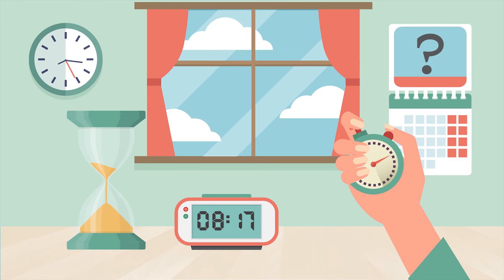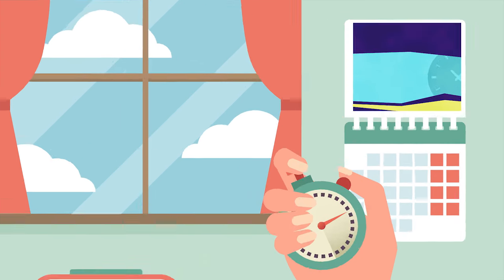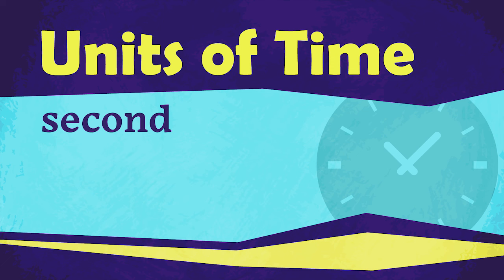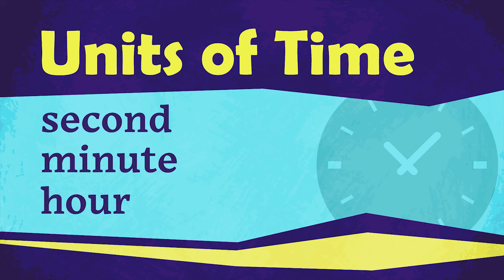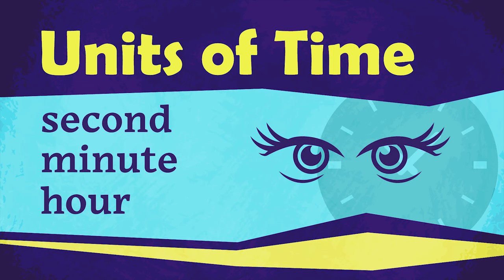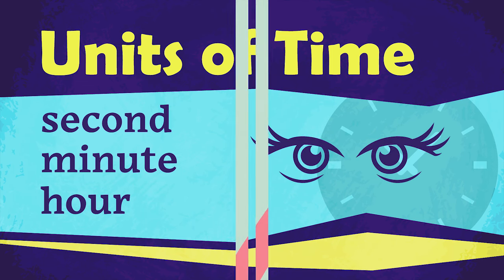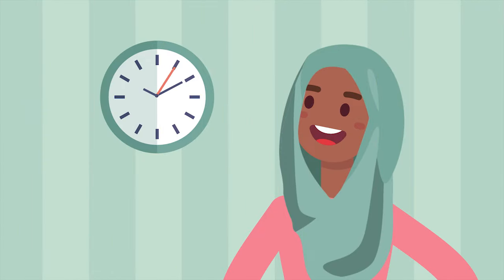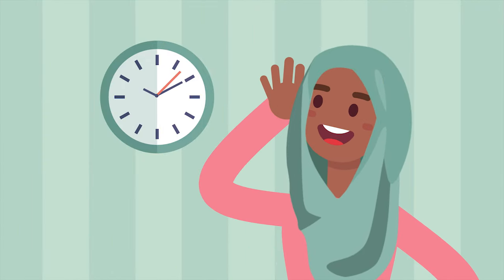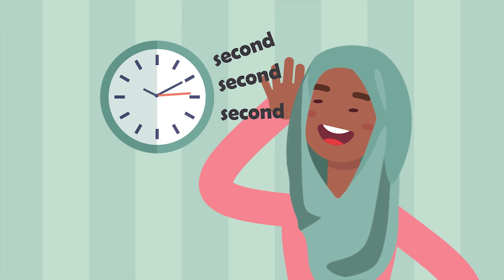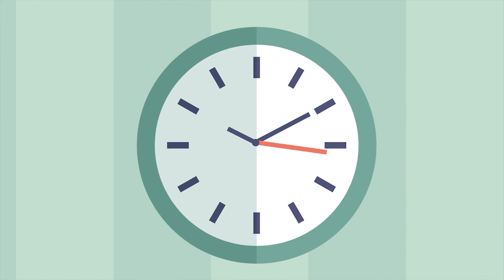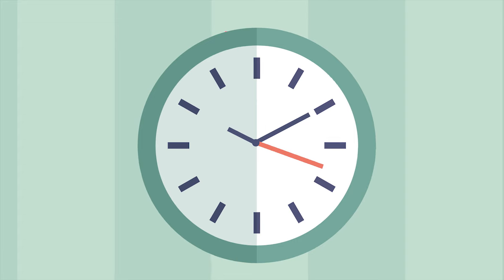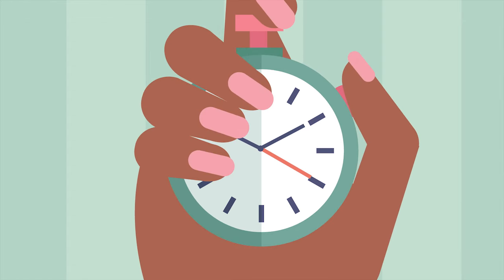Specific units are used to describe different lengths of time. The second, minute, and hour are some of the smallest units of time. The time it takes you to blink your eyes is about one second. If you have a clock in your home that ticks, you can hear how quickly seconds pass. Each tick of the clock is one second. The second hand on a clock shows the seconds passing. Stopwatches and some other timers also count seconds.